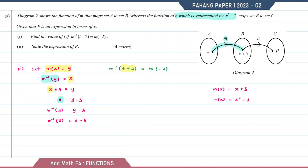t plus 2 is the input of the inverse function. On the left-hand side we get t plus 2 minus 5. On the right-hand side, we input negative 2 into function m, which equals negative 2 plus 5. So t minus 3 equals 3, therefore t equals 3 plus 3, which is equal to 6.